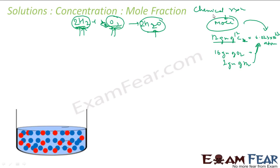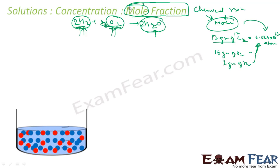Chemical reactions are based on the number of atoms, molecules, or moles. One mole is nothing but 6.023 × 10²³ atoms or molecules. Since chemistry is based on moles, we need a way to express concentration in terms of moles — and thus we have something called mole fraction.